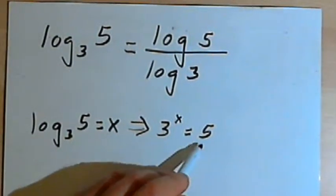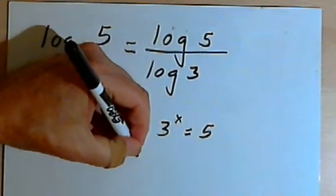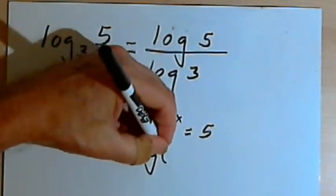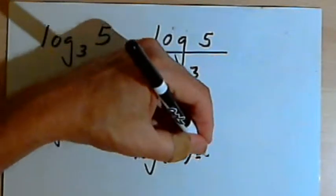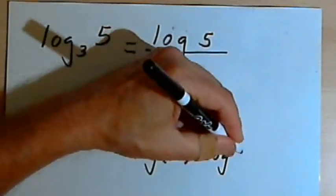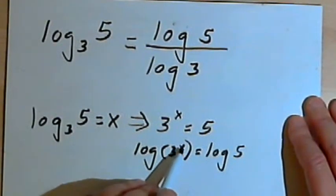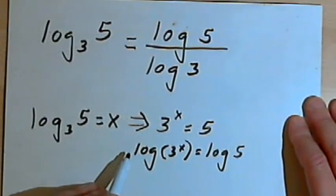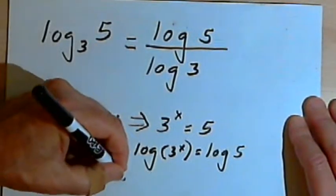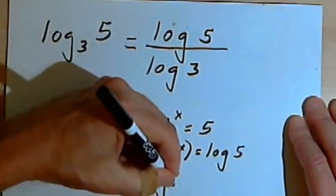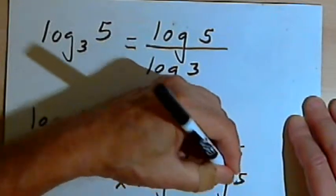And then once I've got that equation, that exponential equation, I can take the log of both sides. So I'm going to have the log of 3 to the x equals the log of 5. Now I've got a rule that says I can take this exponent and turn it into a coefficient. So instead of the log of 3 to the x, I'm going to have x times the log of 3 equals the log of 5.